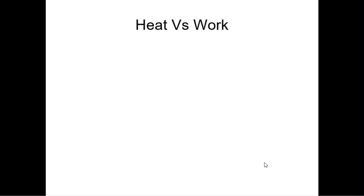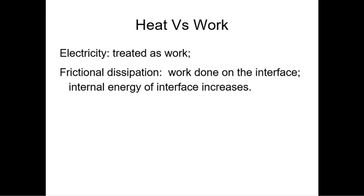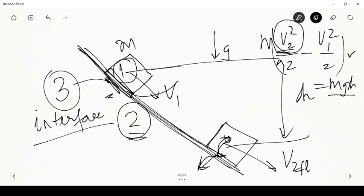So here we said that frictional dissipation, when it is happening between two objects — there is friction when two objects move with respect to each other — then we normally have to consider the interface as an additional entity and the friction is taken to do work on the interface first. This is the way in which we can do the analysis correctly, without which the analysis would actually lead to erroneous interpretations. So in order to understand that, let's move to the whiteboard.